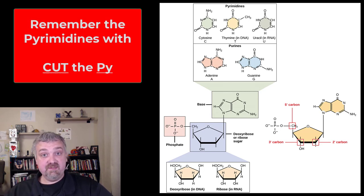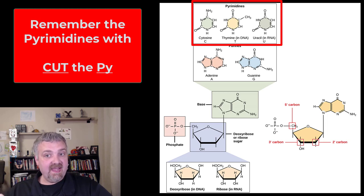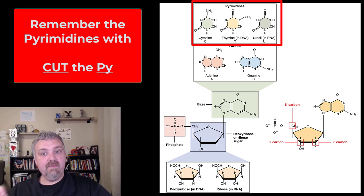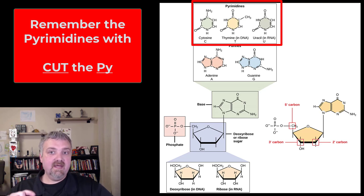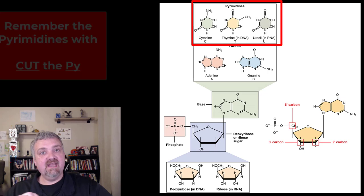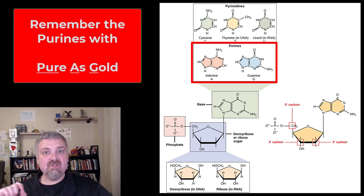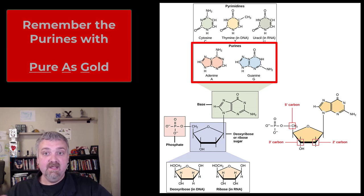There are 5 nitrogenous bases. You have the pyrimidines — cytosine, thymine, and uracil — and how you remember that is 'cut the pie': C-U-T, cytosine, uracil, thymine, cut the pie P-Y, is how you remember the pyrimidines. Then you have the 2 purines — adenine and guanine — and how you remember that is 'pure as gold,' so purines: adenine and guanine.